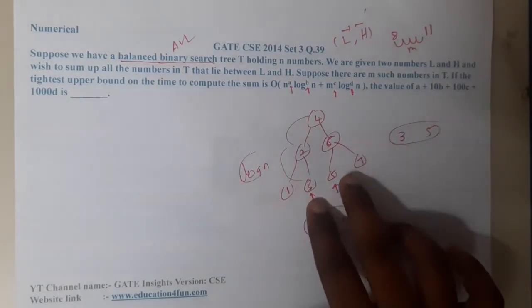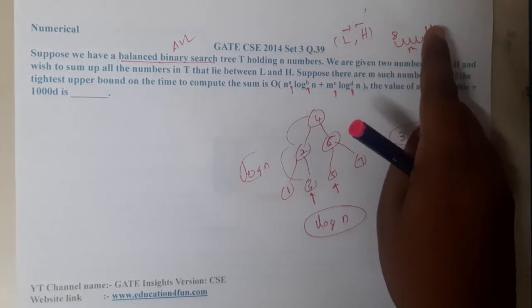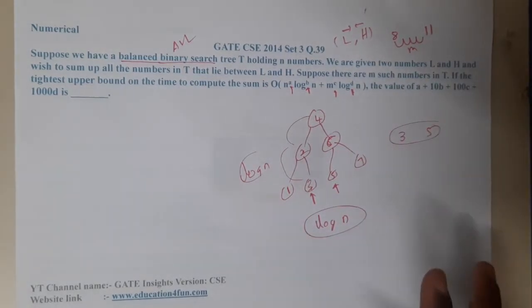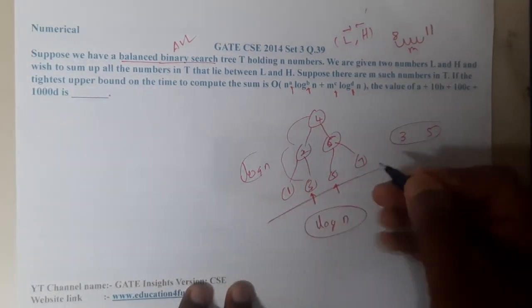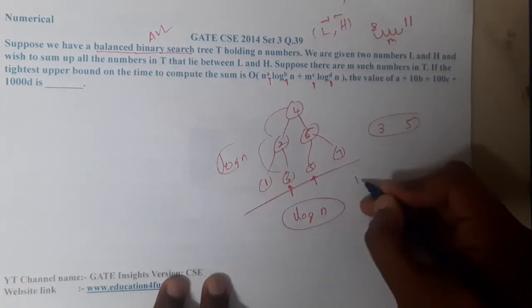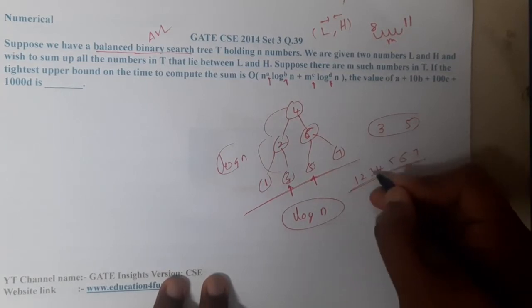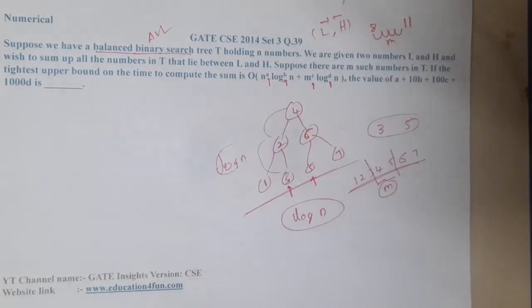Now you somehow searched 3 and 5. The next step is you need to find all the elements in between them. How many elements are there? It will take that much time. You can do a simple trick: do in-order traversal. You will be doing 1, 2, 3, 4, 5, 6, 7 - you got the answer. Now select the elements between 3 and 5.